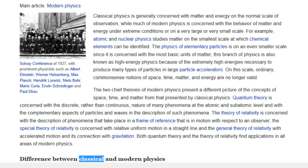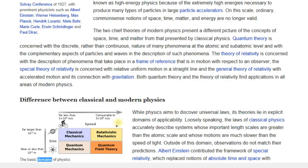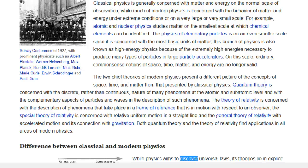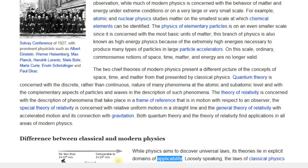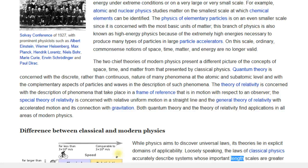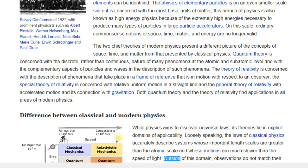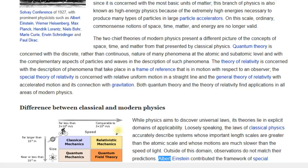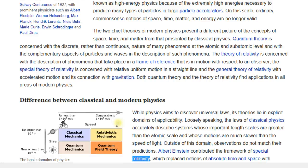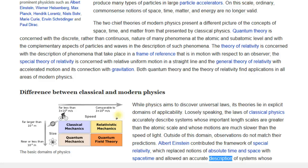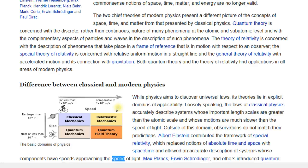Difference between classical and modern physics. The basic domains of physics. While physics aims to discover universal laws, its theories lie in explicit domains of applicability. Loosely speaking, the laws of classical physics accurately describe systems whose important length scales are greater than the atomic scale and whose motions are much slower than the speed of light. Outside of this domain, observations do not match their predictions. Albert Einstein contributed the framework of special relativity, which replaced notions of absolute time and space with space-time and allowed an accurate description of systems whose components have speeds approaching the speed of light.